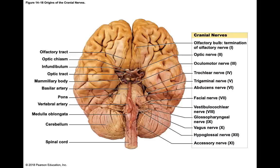There are 12 pairs of cranial nerves — 12 on the right and 12 on the left. On the picture we can see all the cranial nerves exiting from the brain. Cranial nerve 1 (the olfactory nerve) is at the most superior point, and as we go down to cranial nerve 12, it leaves the central nervous system at the most inferior portion of the brainstem.